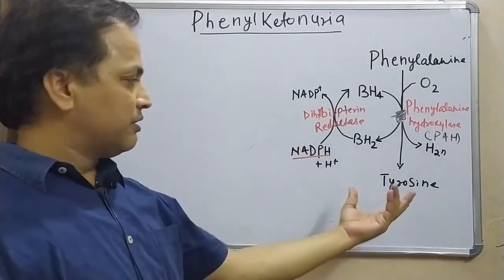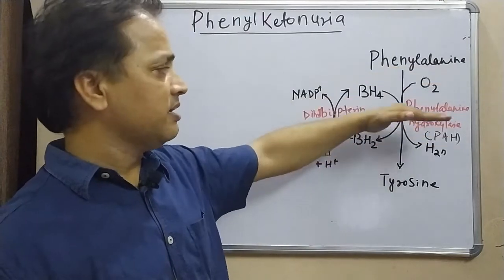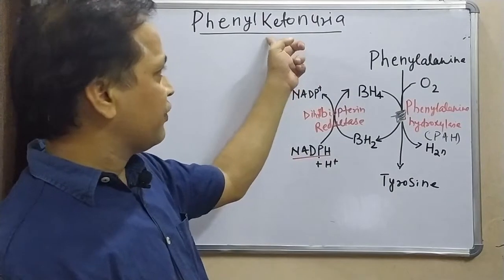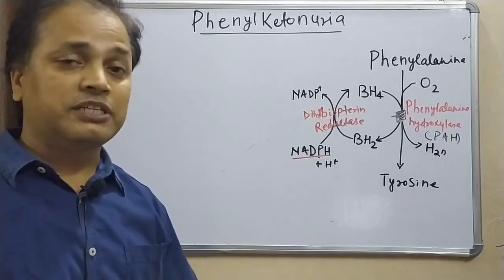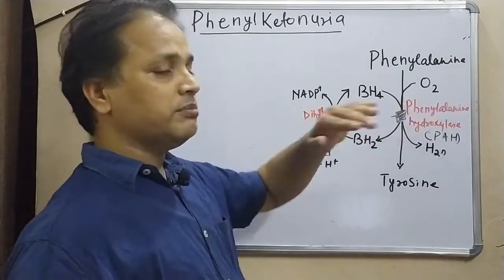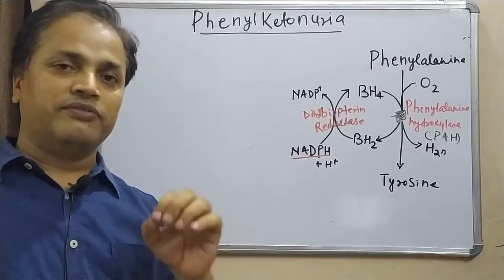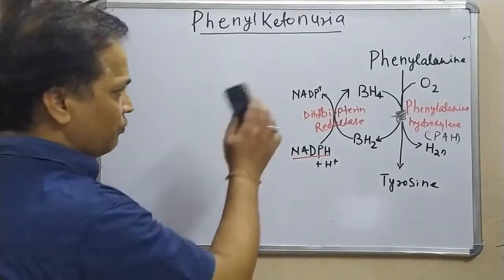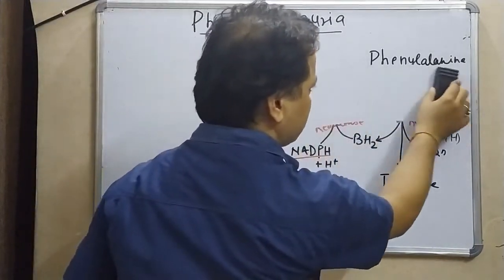Because this enzyme is defective and we are not getting tyrosine from phenylalanine, our dependency on tyrosine increases. Tyrosine, which is normally a non-essential amino acid, becomes essential in the case of phenylketonuria. Since phenylalanine cannot be converted to tyrosine, we have limited resources of tyrosine and must obtain it from the diet.